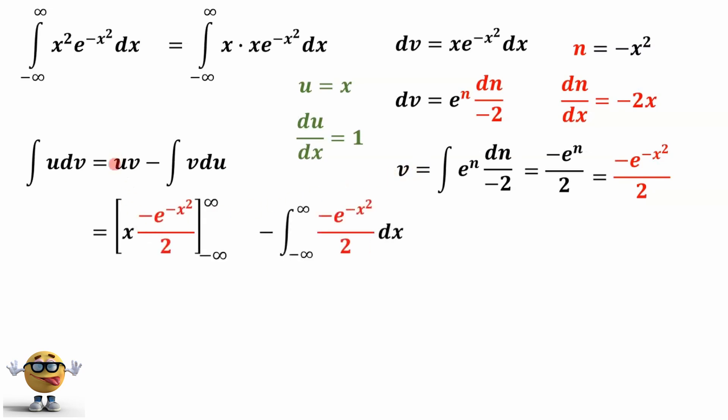We'll substitute that in where u is x, because that's what we set it for. v is what we evaluated right here: negative e to the negative x squared over 2. And the limits don't change, because we're still in terms of x from negative infinity to infinity. Minus v is what we just had right here. We'll substitute that in, again the same limits.